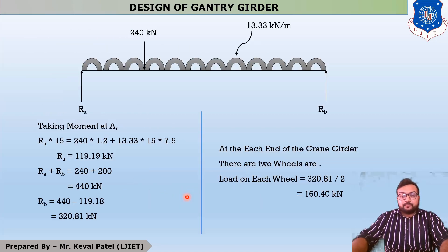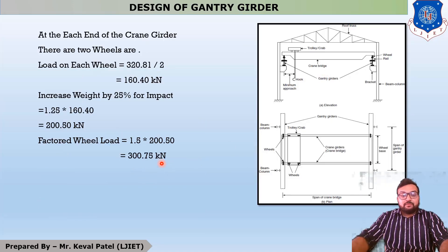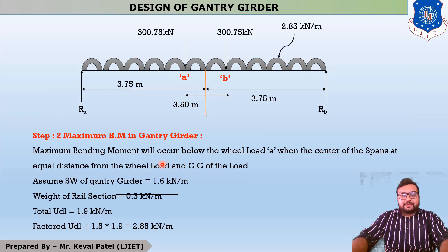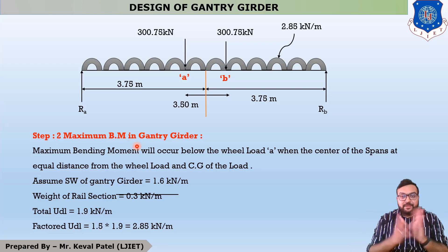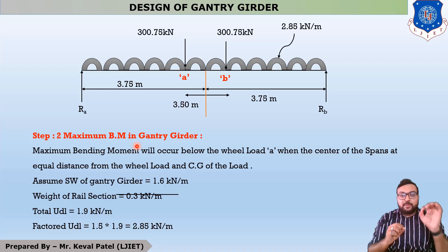Looking at the final figure, we find reactions RA and RB at the two support points, then divide that reaction equally between the two wheels. In the last lecture we found up to 300.75 kilonewtons. Now moving to step number two: maximum bending moment in the gantry girder. This step uses the absolute bending moment method from Mechanics of Solids.